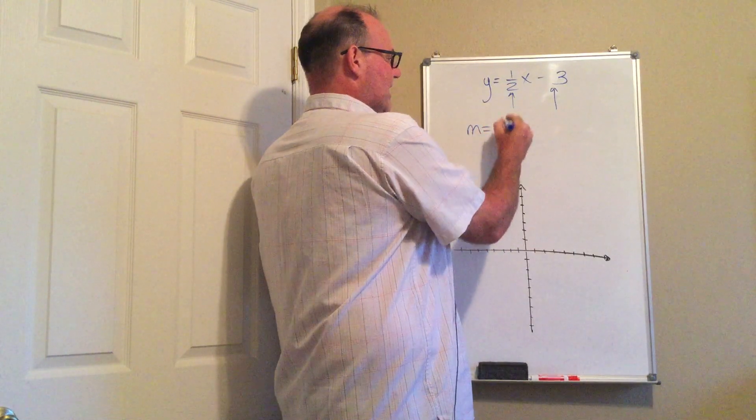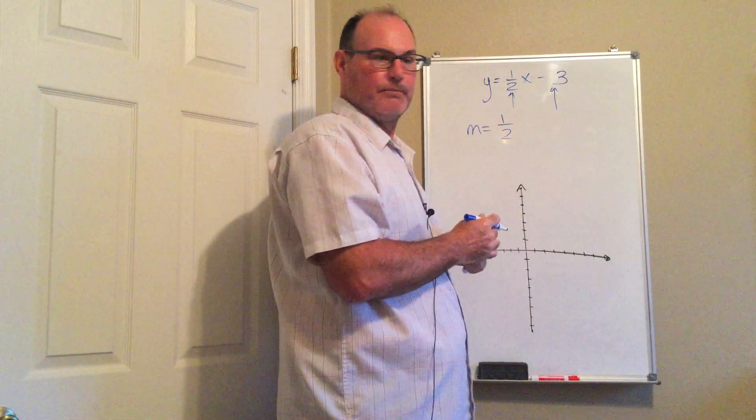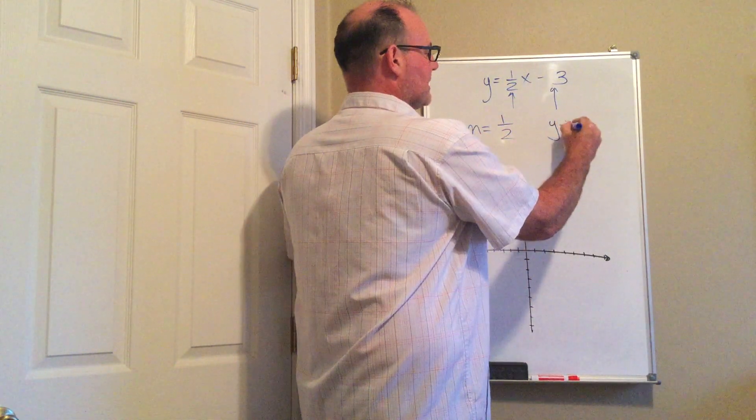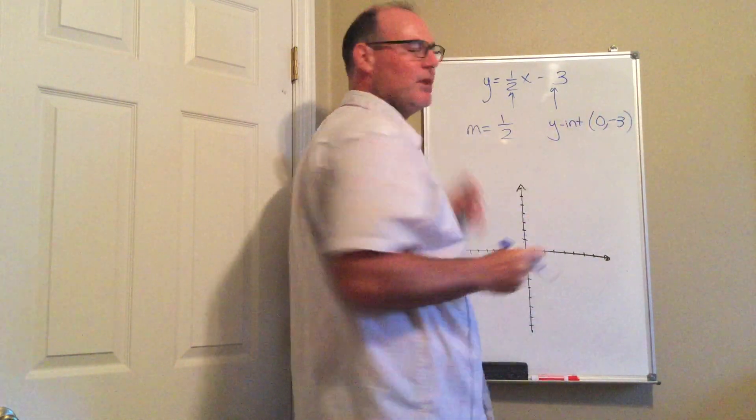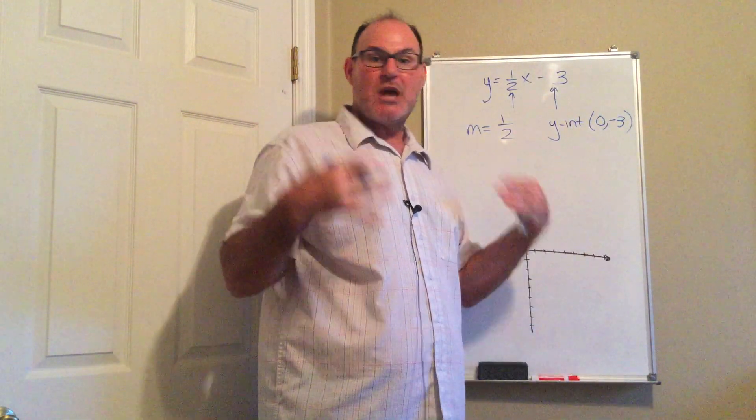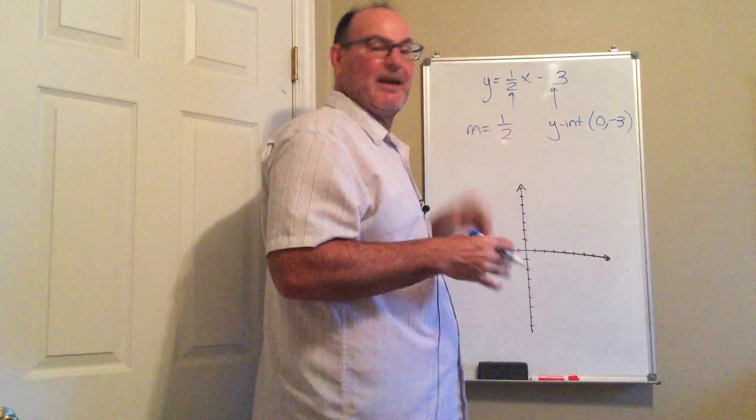So my slope m is the value 1 over 2 and then the y-intercept is 0, negative 3. So this makes graphing nice and smooth and quick when you find that information.